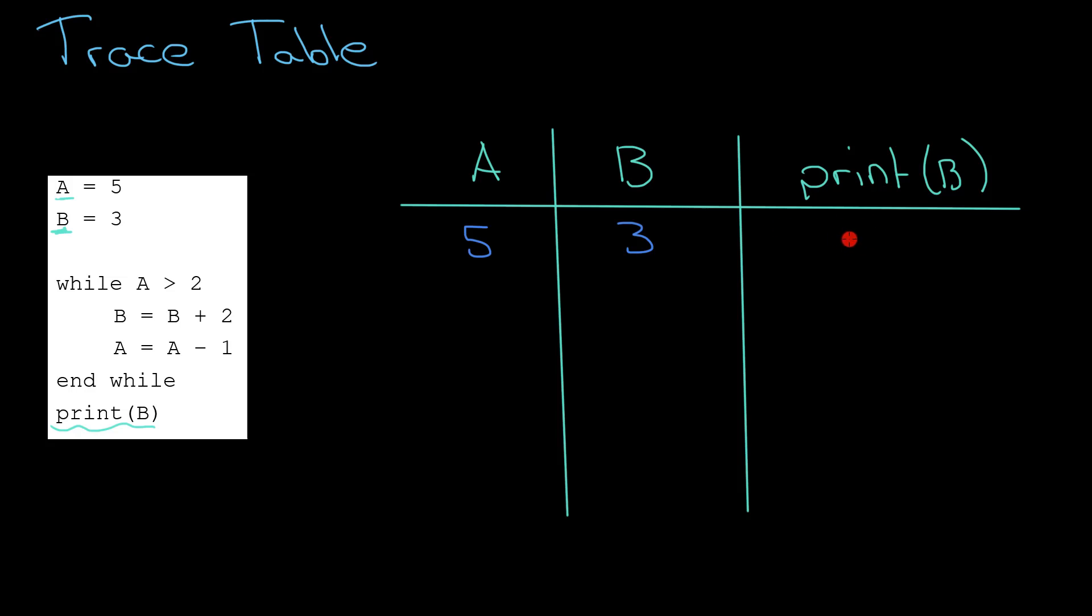Our next line of code then - we started up here, didn't we? We did A equals 5 and then we moved to B equals 3. Our next line of code is this: while A is greater than 2. So that begs the question: is A at the moment greater than 2? Yes it is, because it's currently got the value 5, so I know I'm good to go into this loop.